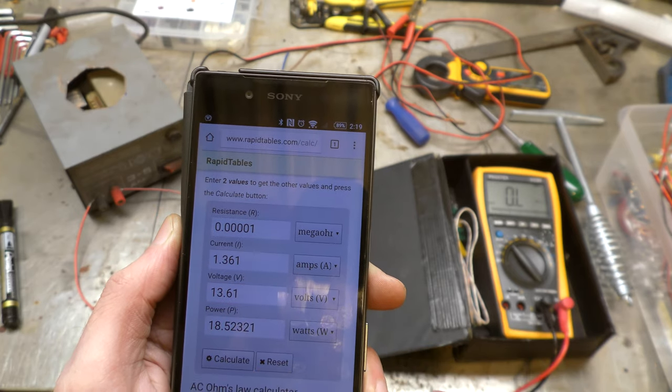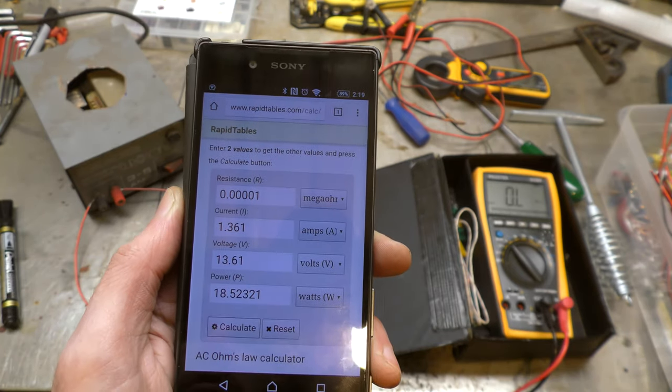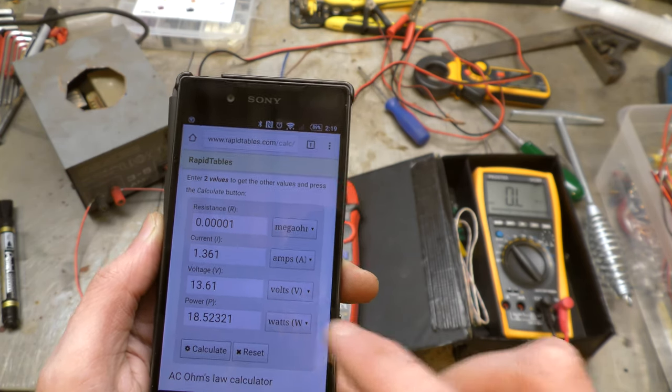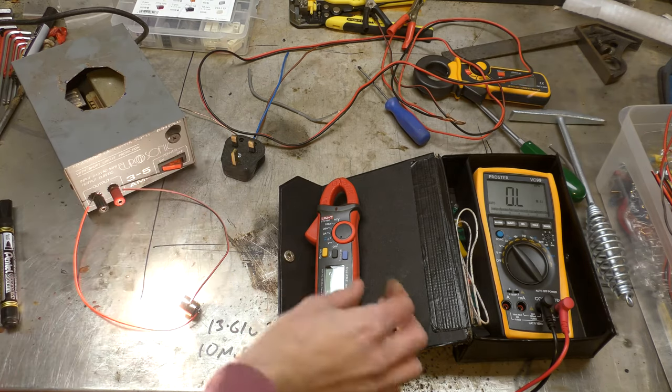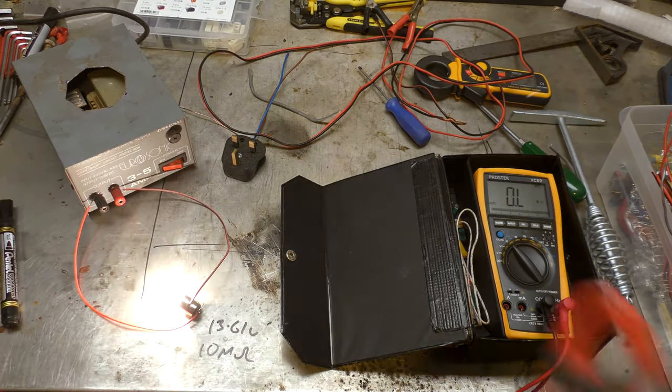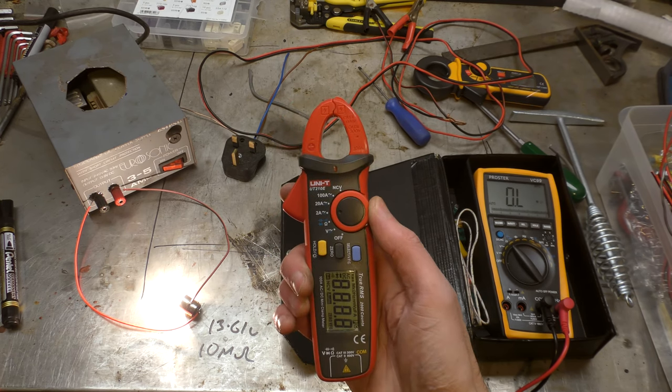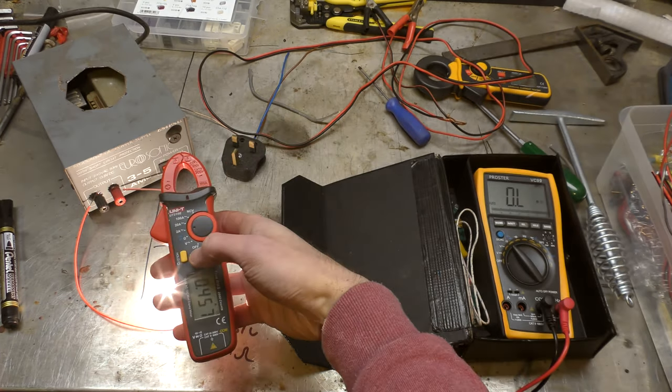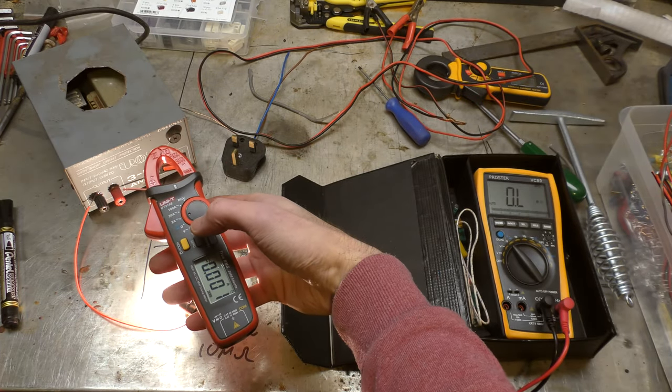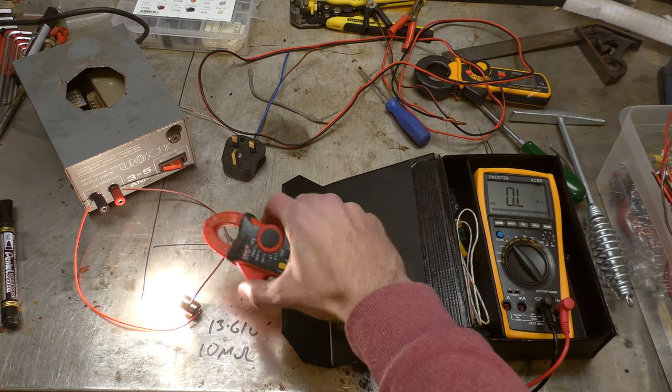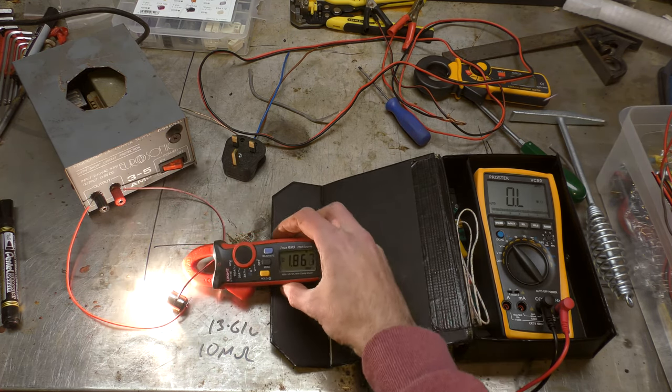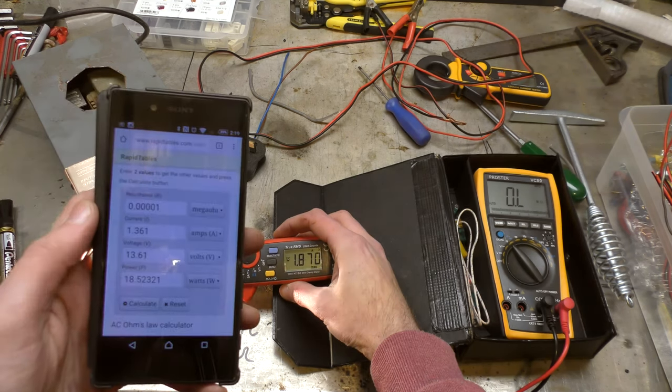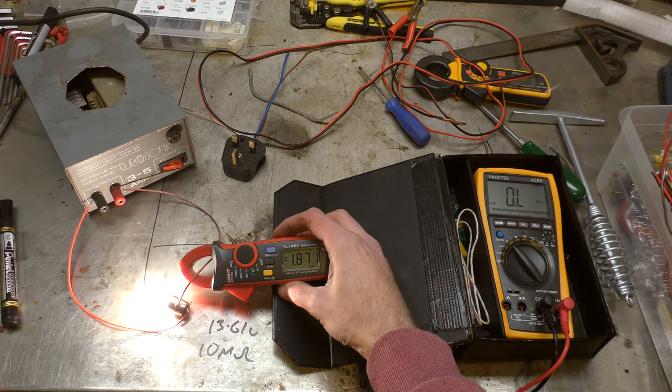And that should give us a current of 1.361. Okay, 1.361, let's see what the clamp says. So for DC mode you have to zero out in and around what you're working on as it picks up a lot of interference. But now if we put it around this, 1.86 as opposed to 1.36. So it's pretty close.